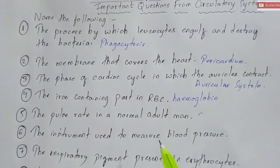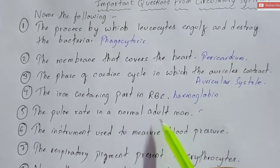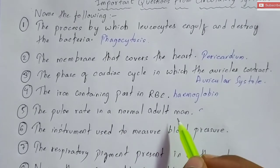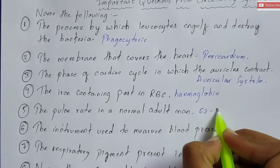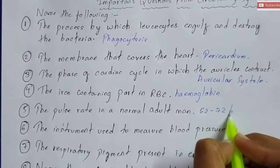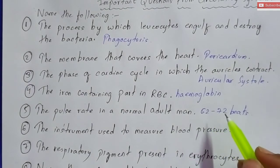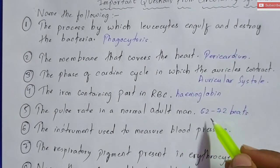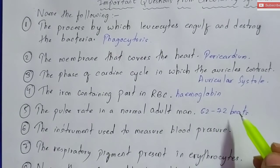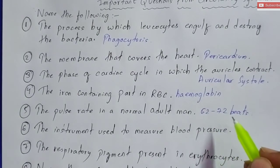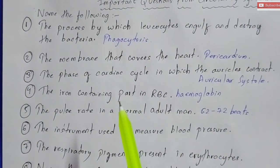Question number five: the pulse rate in a normal adult man. The pulse rate in a normal adult man is 62 to 72 beats. You can write 62 to 72, or you can also write 72, or 64 to 72 — that is also correct. For women, it is 72 to 80 beats. Pulse rate is the same as heartbeat.